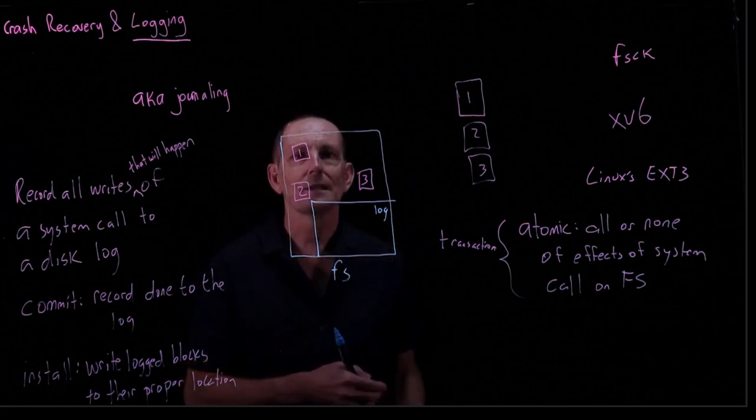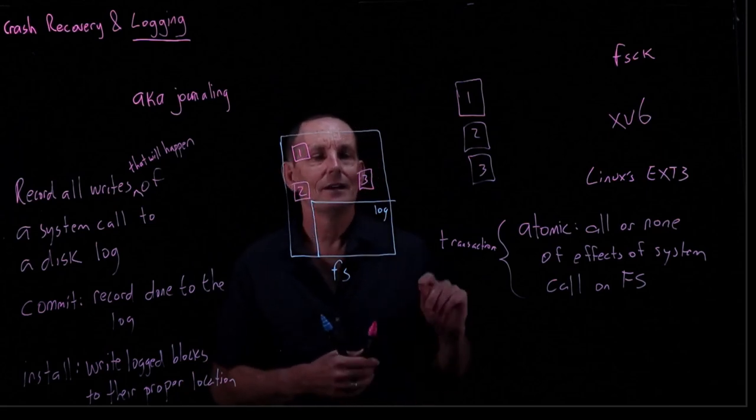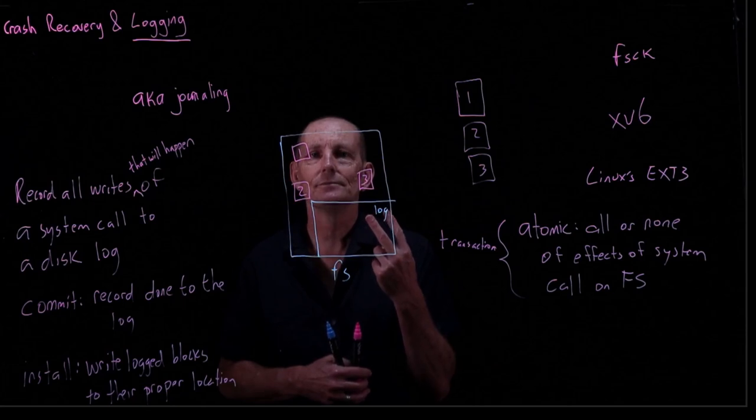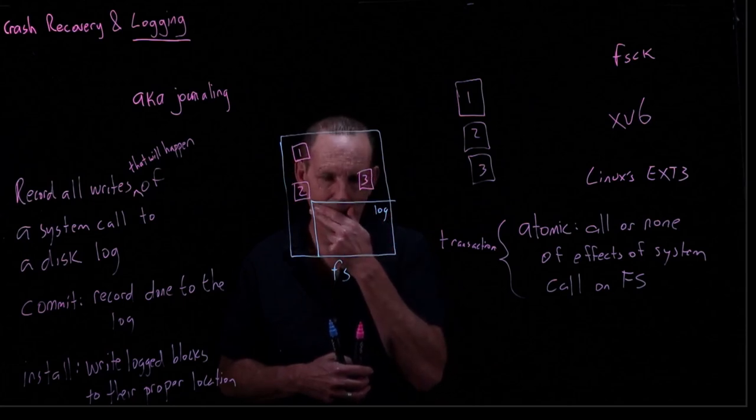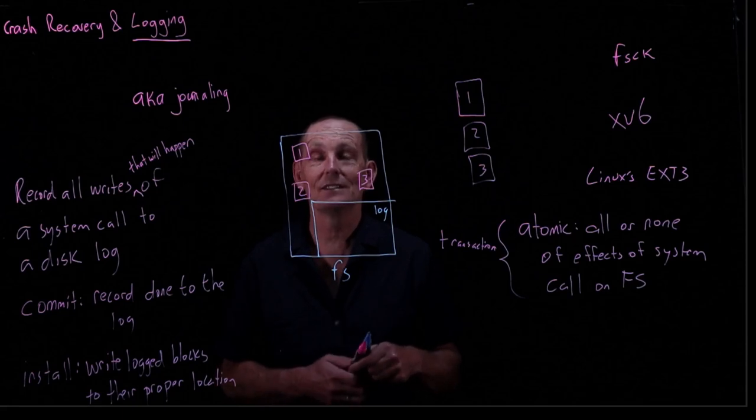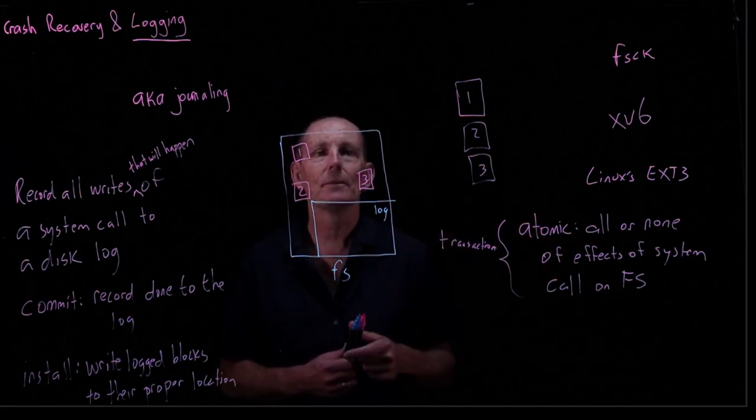So this is the normal case. What's our cost? We have to write every block twice. So there's a slowdown by a factor of two. So it's a fairly extensive cost. Our advantage, though, is we get both correctness and we get a quick startup.